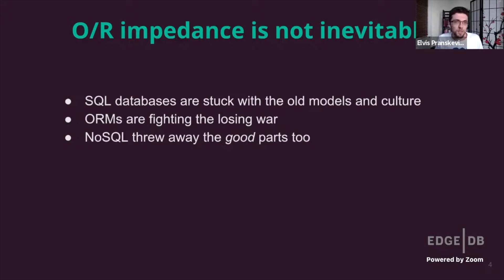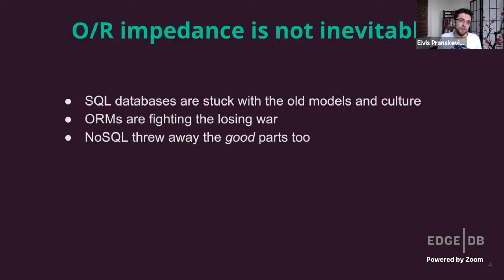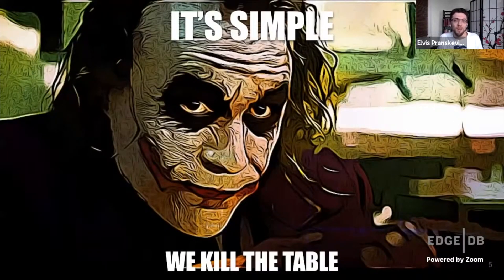I also have to mention NoSQL, which is an attempt to deal with the whole problem by removing the relational part altogether. But the reality is that the relational model, the strict schema, and high-level abstract query language are actually very useful. So NoSQL will likely always remain no more than a niche. What do we do? The answer is simple: we kill the table. We need to adjust the database model and replace SQL with something better.